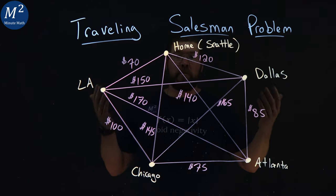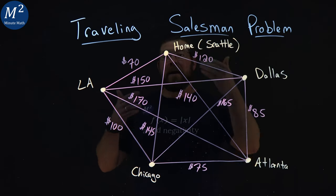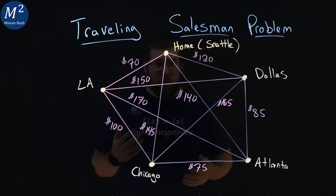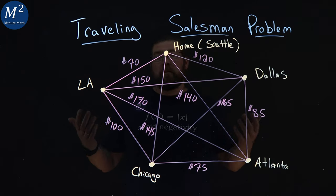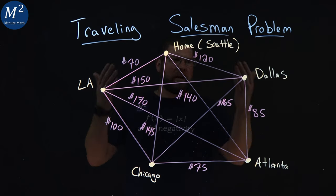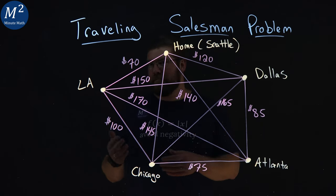Hence the traveling salesman problem. You want to go to each city only once and make it back home and find the optimal way to do that. So there are many ways that we can go about trying to figure this out to find the most optimal way, and we'll learn more about that in other videos. But let's look at this graph here. It's small enough where we can kind of see what is the best path.